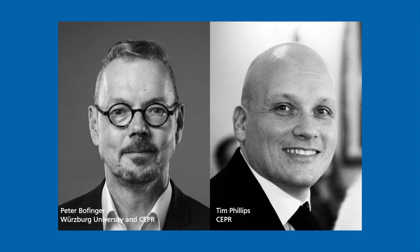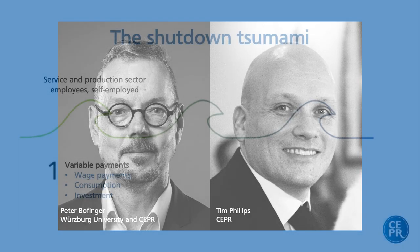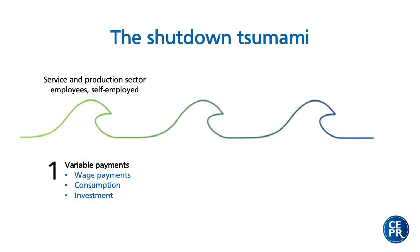What we see now is the shutdown, which has become effective almost all over the world. In economic terms, one can compare the shutdown to a kind of economic tsunami hitting the whole economic system. The first wave hits the service and production sector — especially what we call social consumption — where many payments are variable: wage payments, consumption, investment — all these variable payments are cut down.